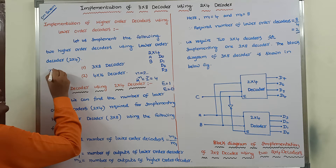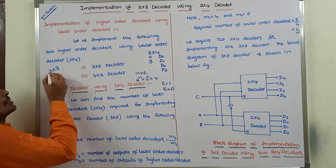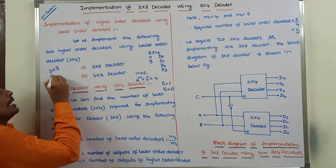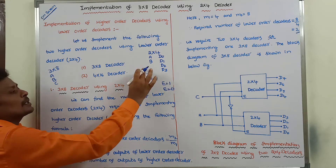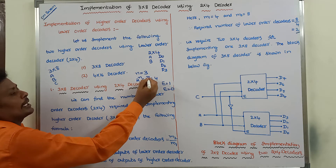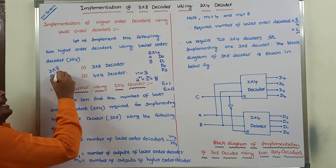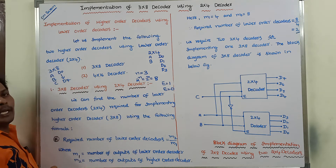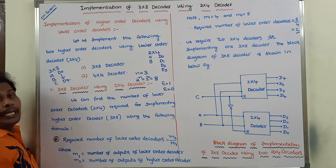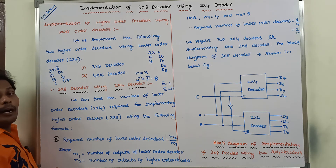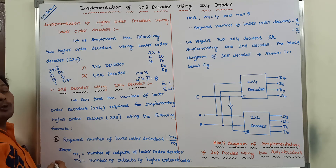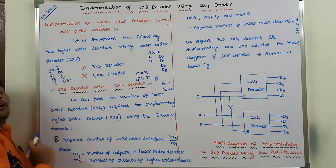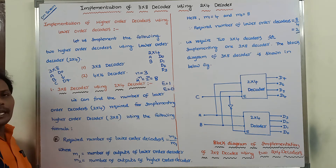Next, we go to the 3 by 8 decoder. As the name implies, the first coordinate is the number of inputs — 3 inputs: A, B, and C. The number of outputs generated is 2 power 3, which equals 8 outputs: D0 to D7. When the enable input E is equal to 0, the 3 by 8 decoder cannot function properly. If the enable input E is equal to 1, it operates correctly and selects only one output as actively high based on the possible combination of input values A, B, and C.